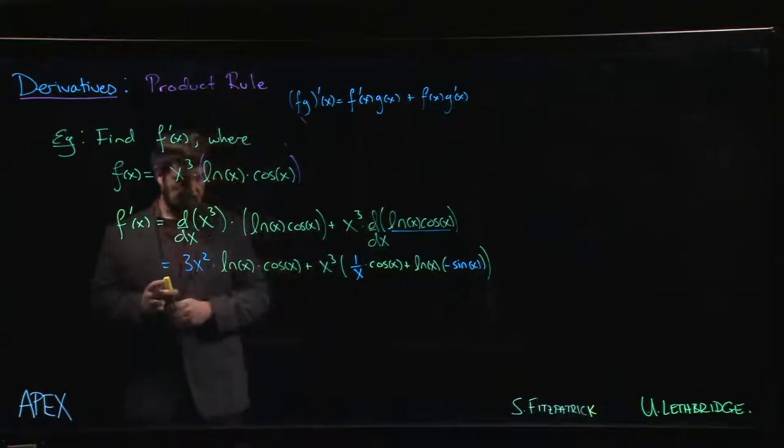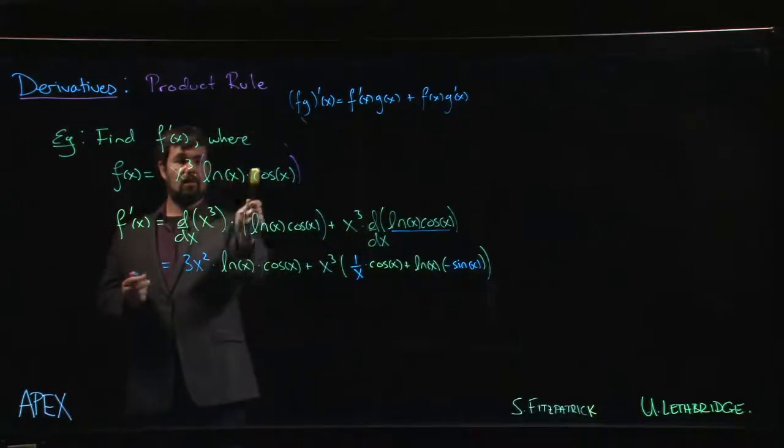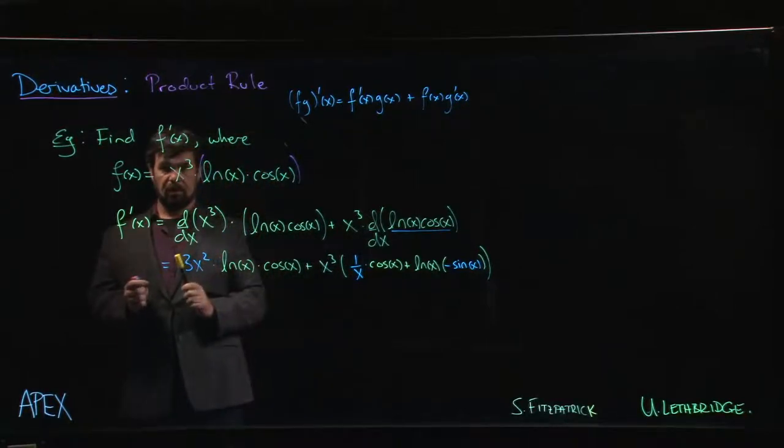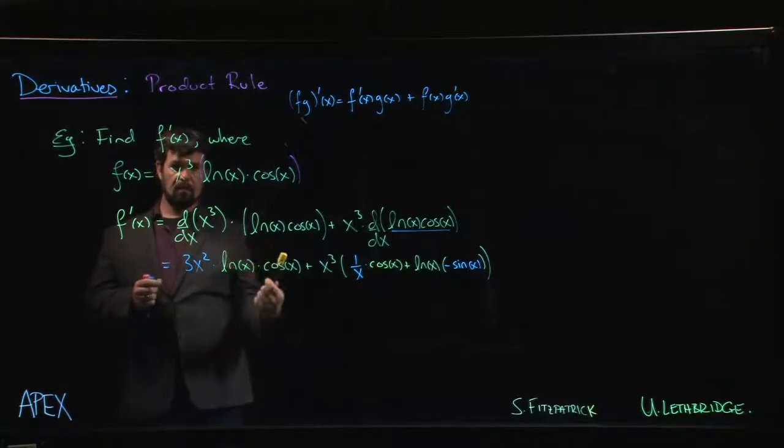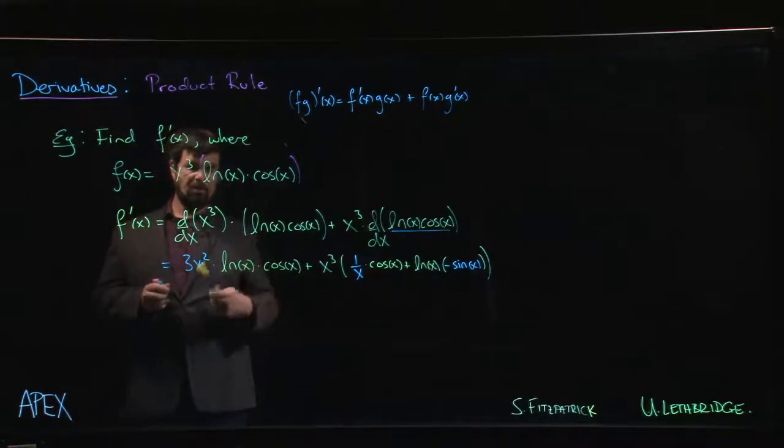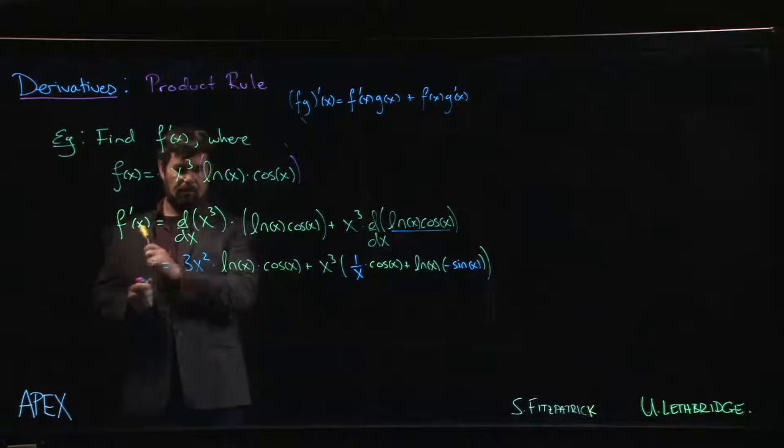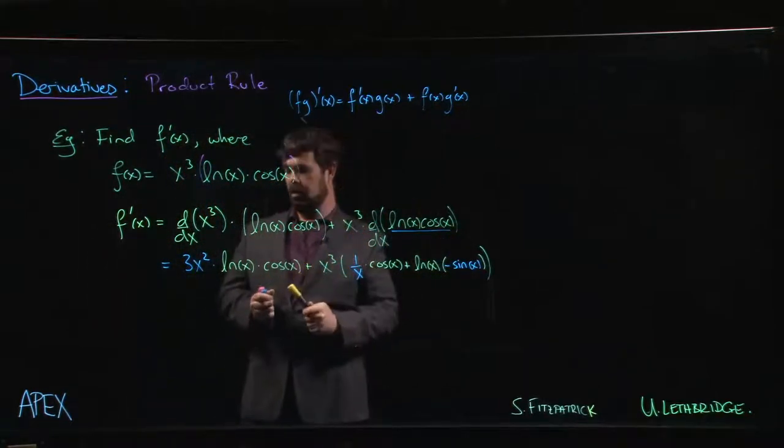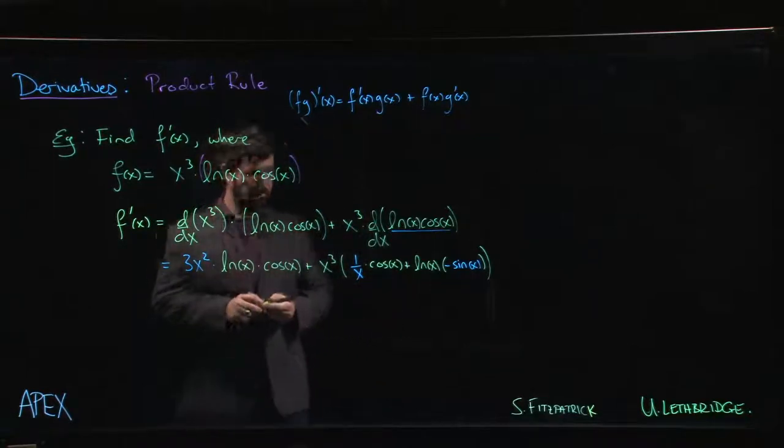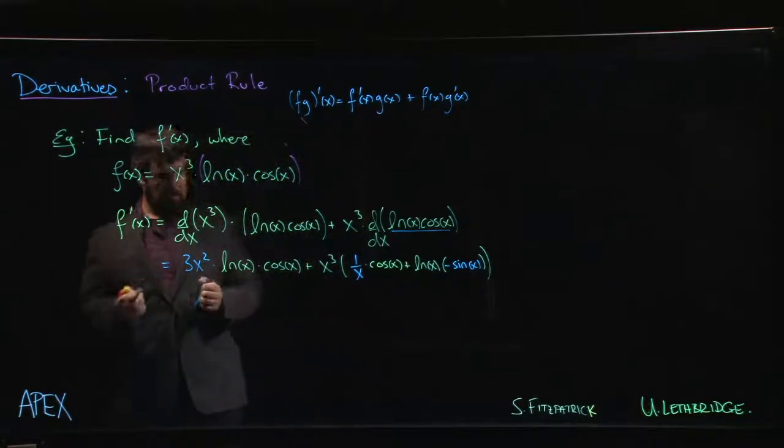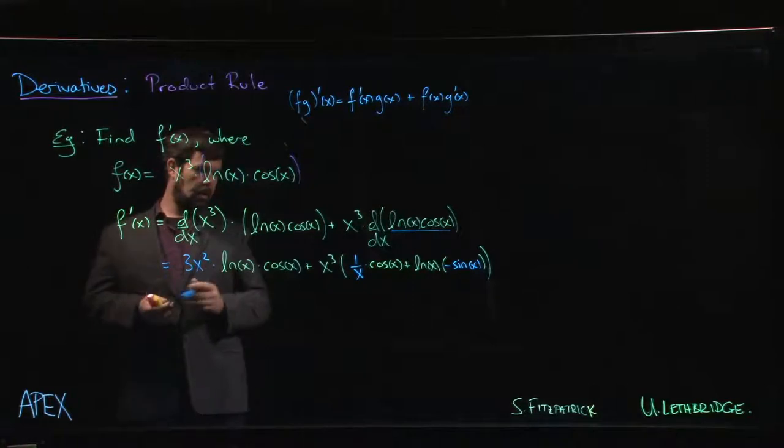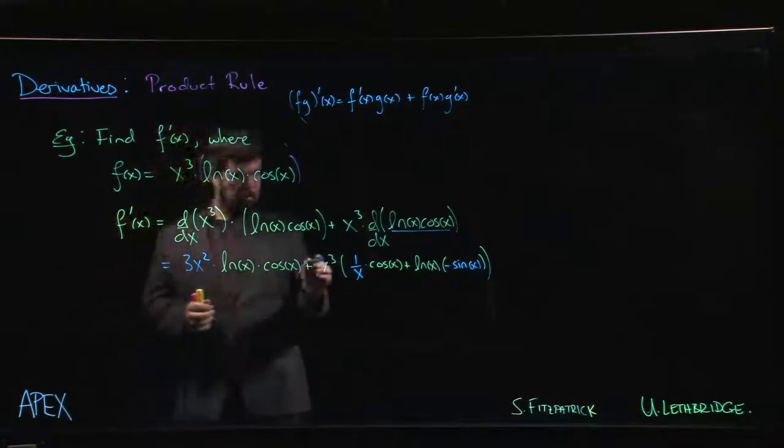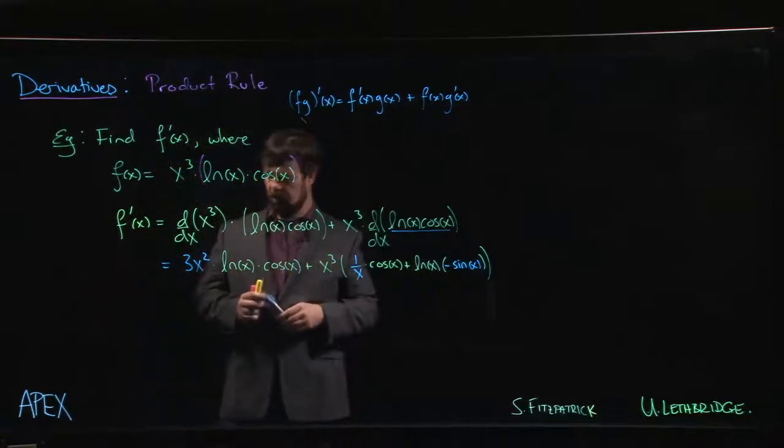One of the things that you'll notice is that for each of the three factors in the product we started with—each of them, the derivative of each one shows up and shows up exactly once. Derivative of the first, derivative of the second, derivative of the third. And in fact, if we want to, we can multiply this all out and simplify a little bit.